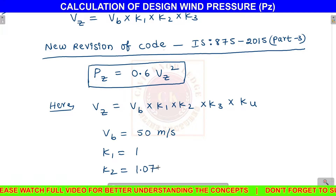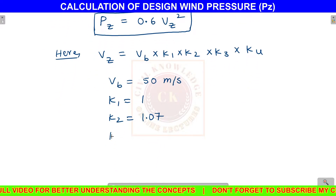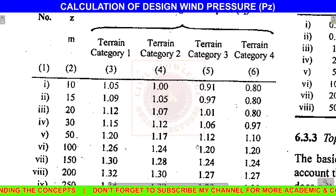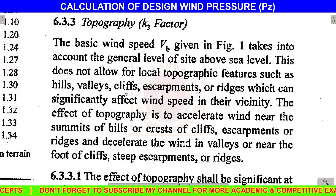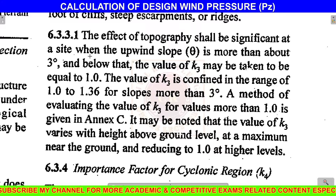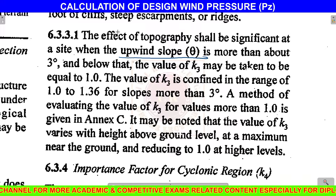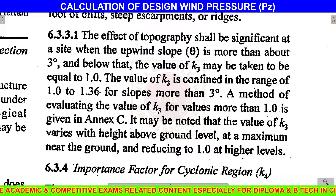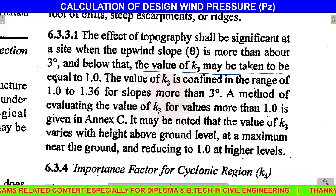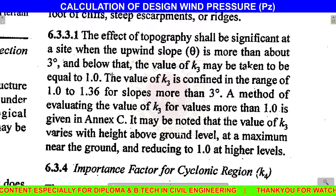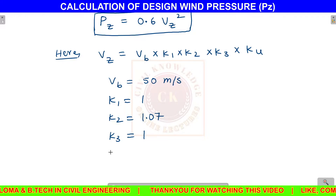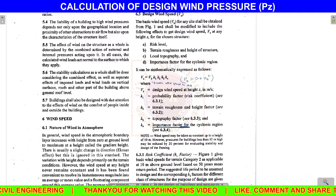K3 is the topography factor. Our topography is flat ground with no hills and slopes. For flat ground, where the upwind slope is less than 3 degrees, the value of K3 may be taken as equal to 1. So K3, the topography factor, is 1.